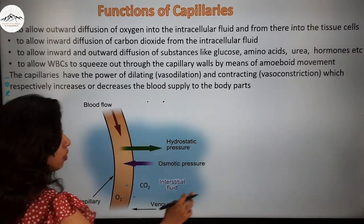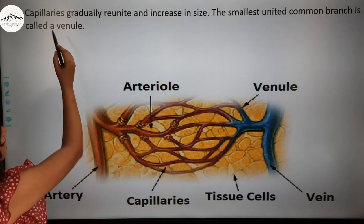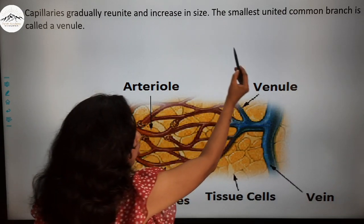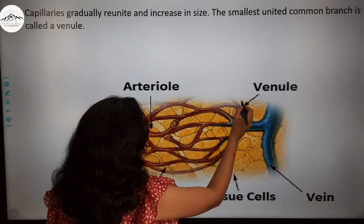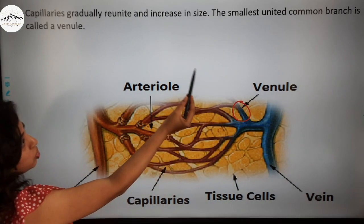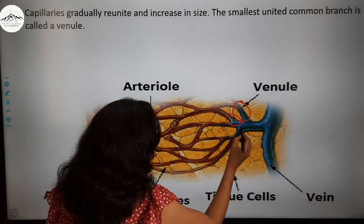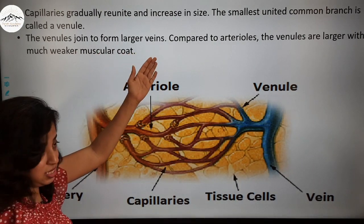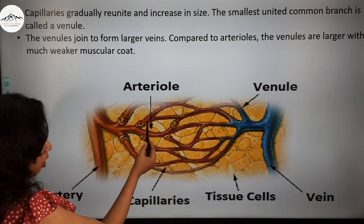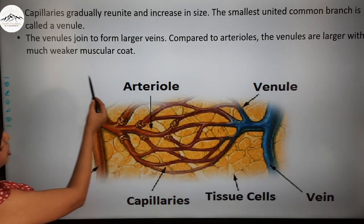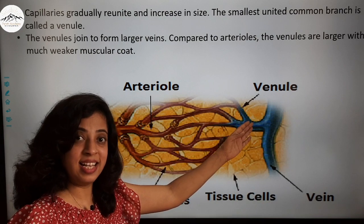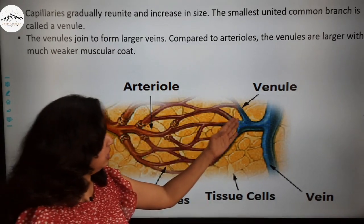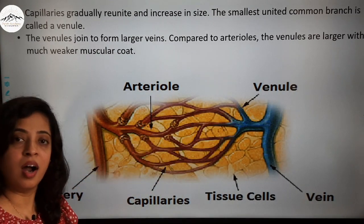Capillaries gradually reunite and increase in size. The smallest united common branch is called a venule. All the venules unite to form a vein. Compared to arterioles, venules are larger with a much weaker muscular coat — the venule is larger in diameter than an arteriole, but has less muscular tissue.